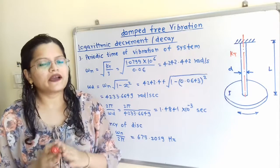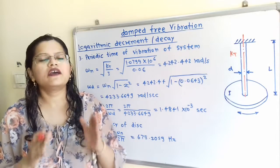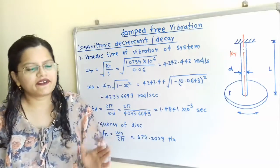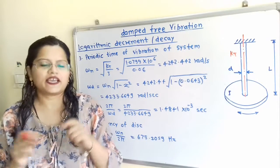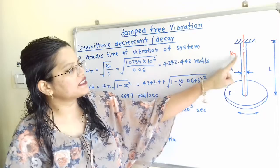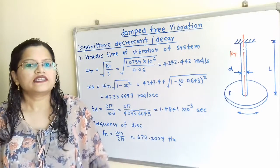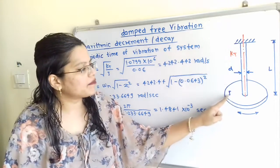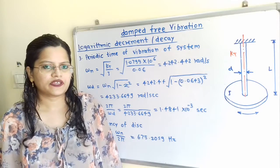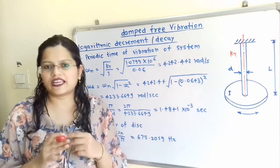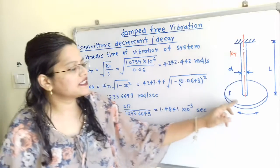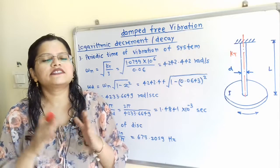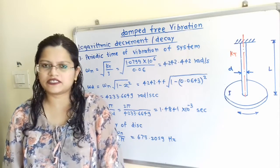If we compare the shaft and disc arrangement with a spring-mass-dashpot system: the shaft is equivalent to the spring with torsional stiffness KT, the disc is equivalent to mass M with mass moment of inertia I, and the dashpot is represented by the disc being in contact with viscous fluid — this viscous fluid is equivalent to the dashpot in the linear system.